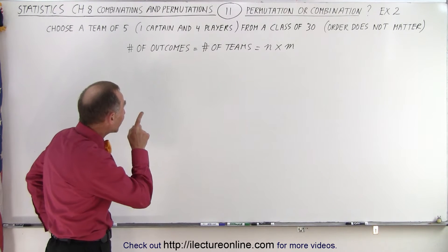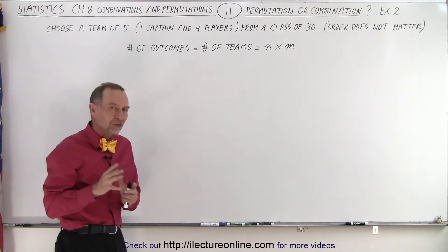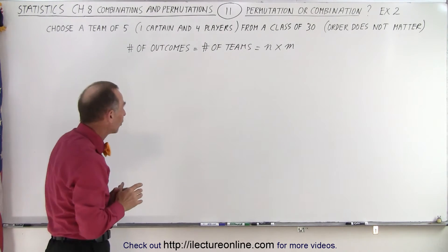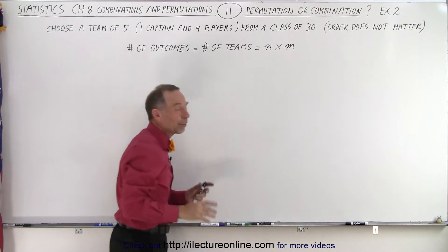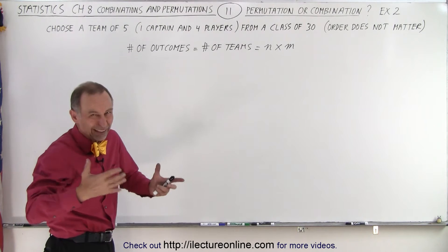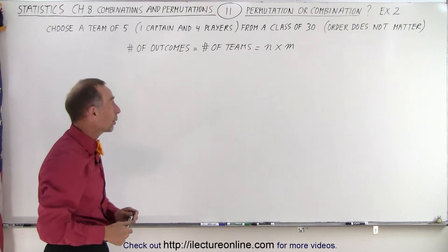First of all, notice that the action of picking a captain is going to be different than the action of picking four players. So really, the number of outcomes, which is the same as the number of teams we can choose, is going to be the product of two outcomes. Call it N and M. Doesn't matter, we can just use any letters, A and B, whatever you want to call it.